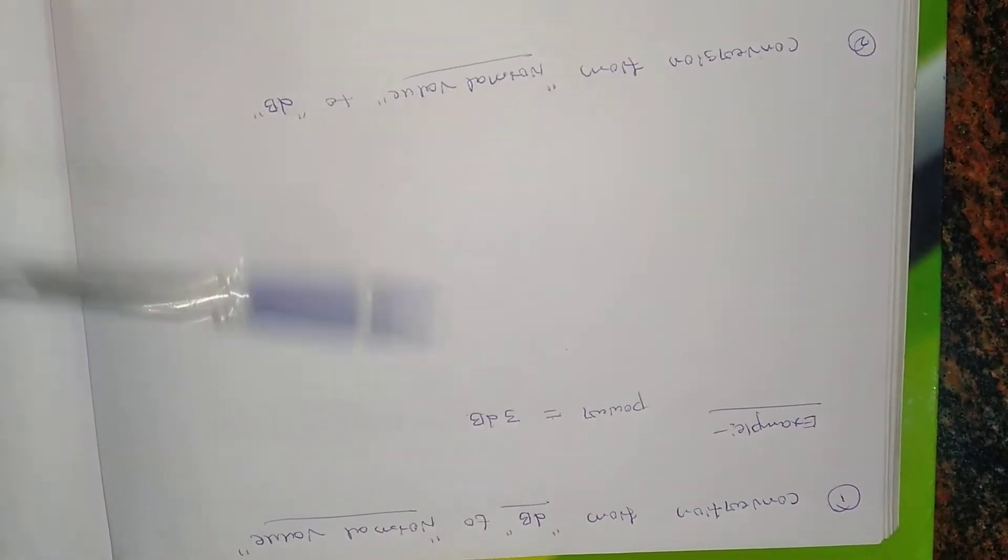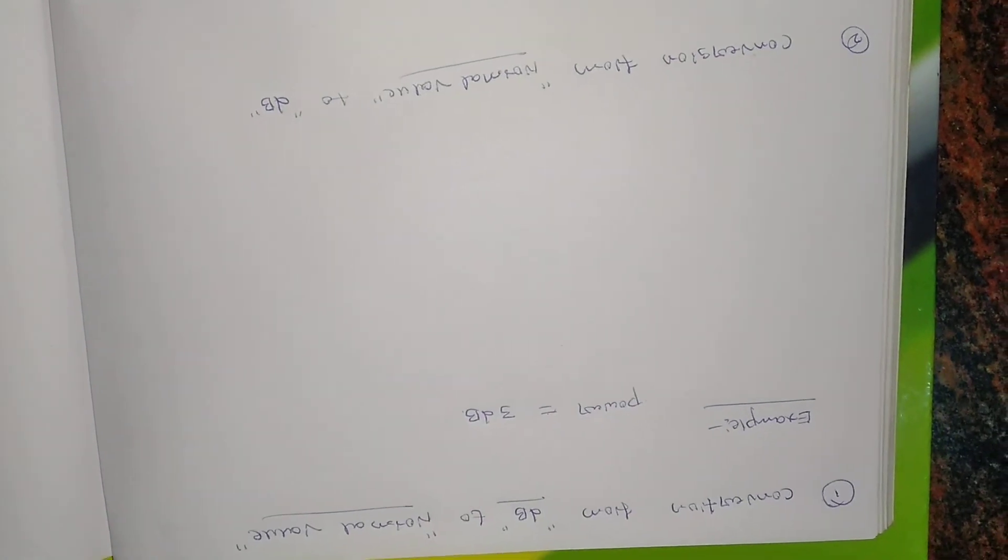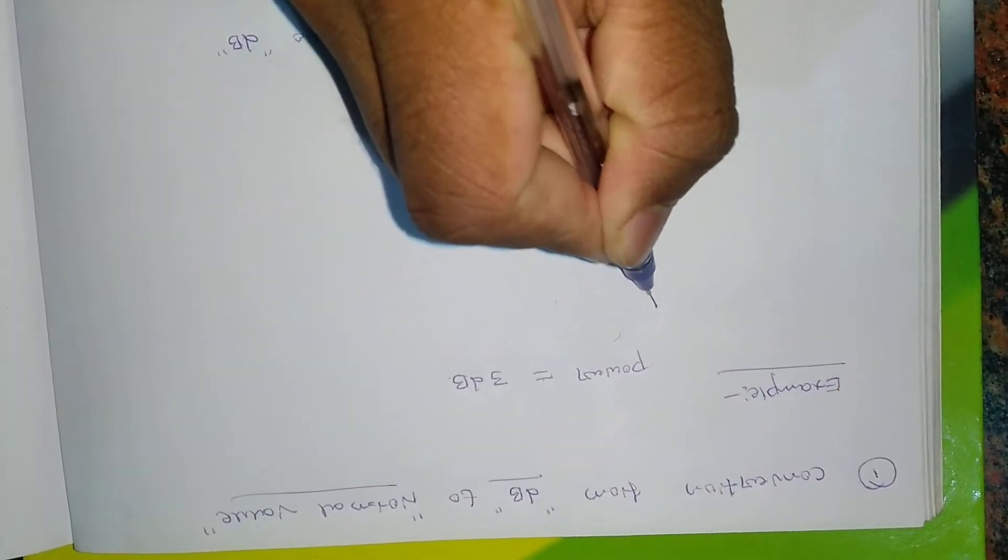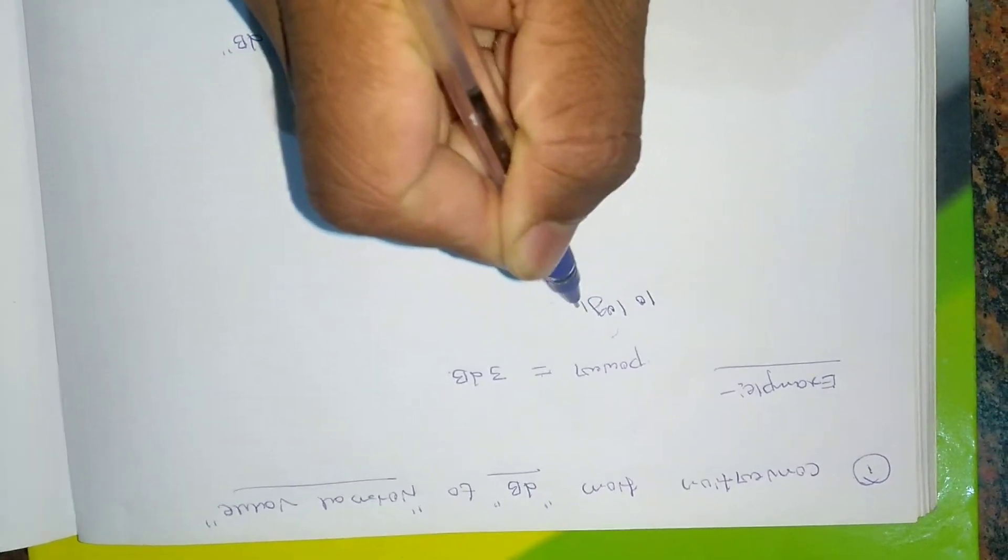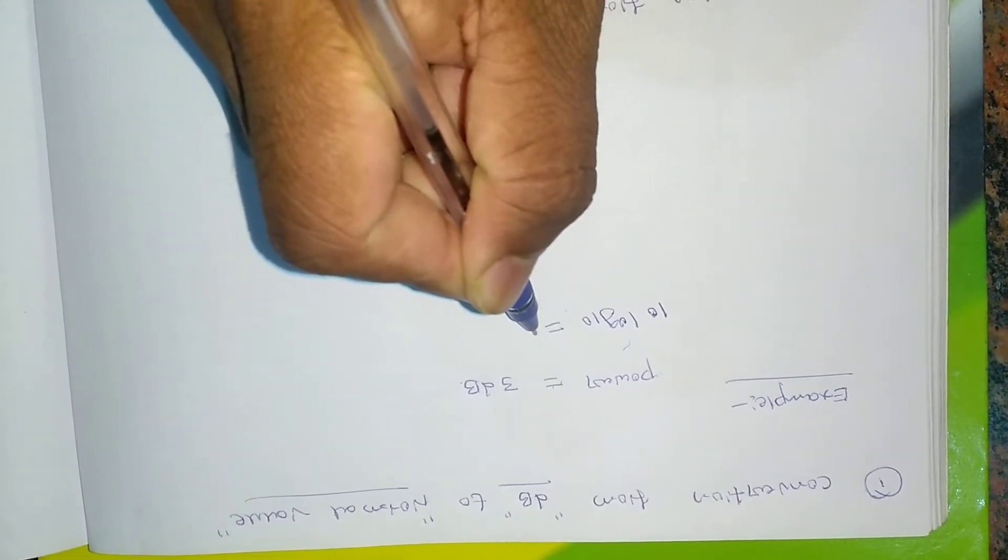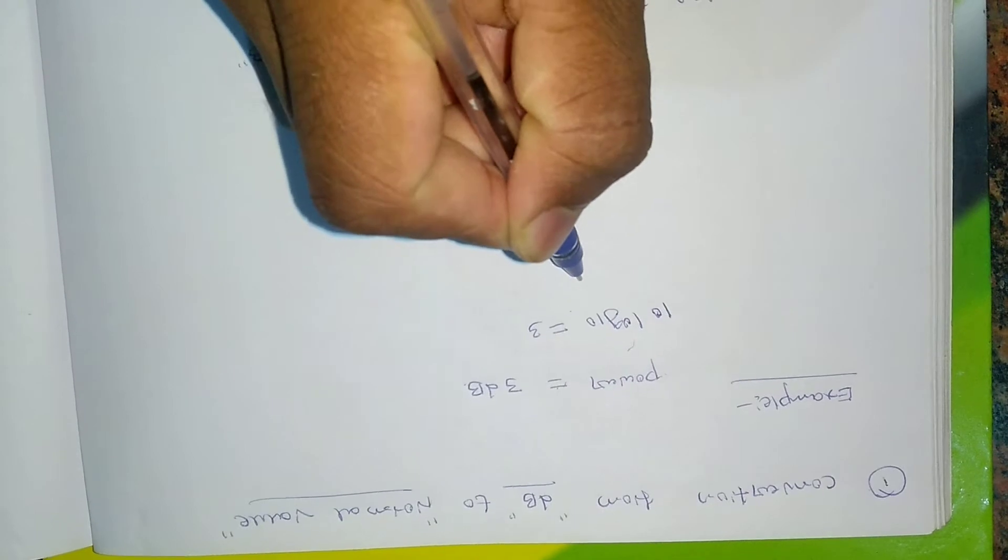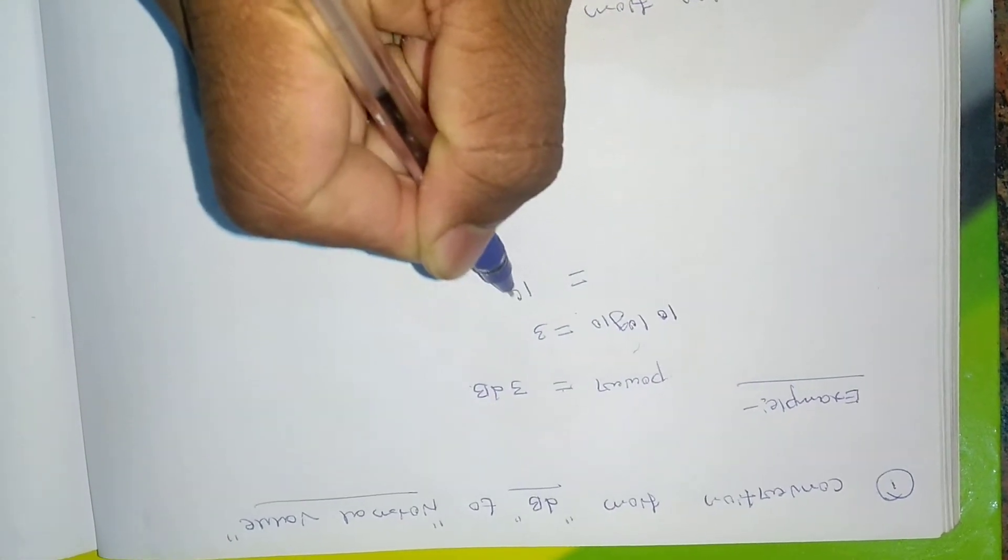Once the power is given in terms of dB like this, what we'll be doing is we'll just write like this: 10 log 10 which is equal to 3. Okay, so then normal value will be equal to 10 to the power whatever number will be there, that is divided by 10.